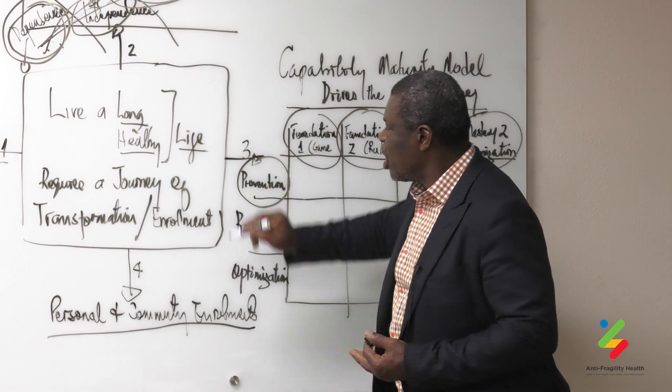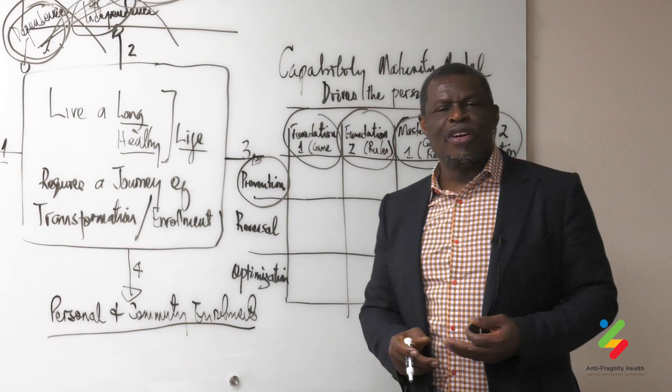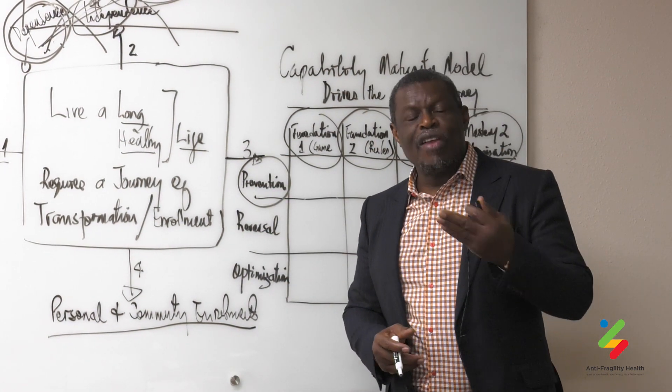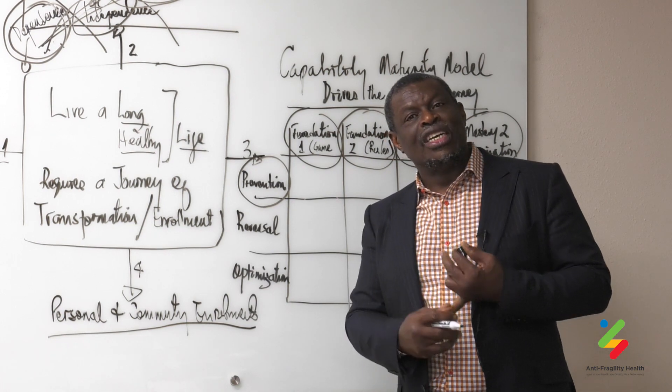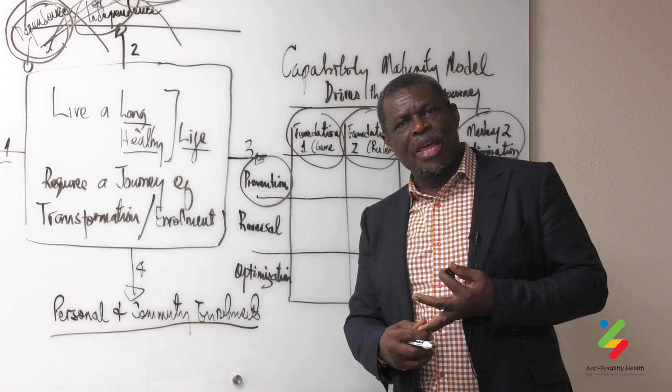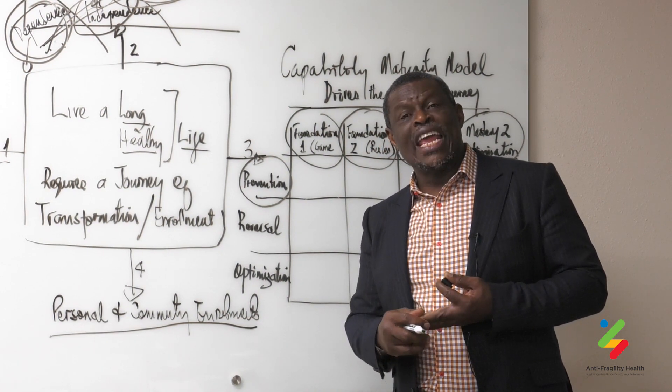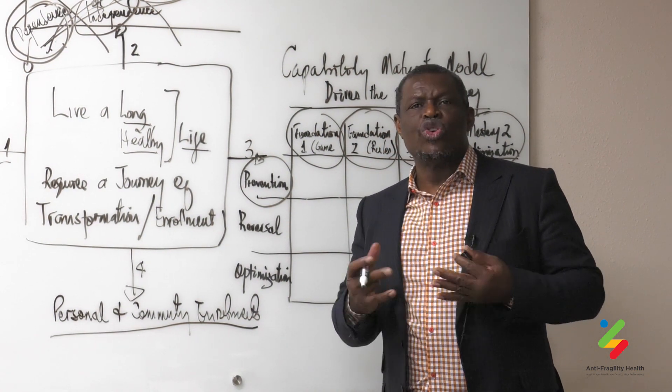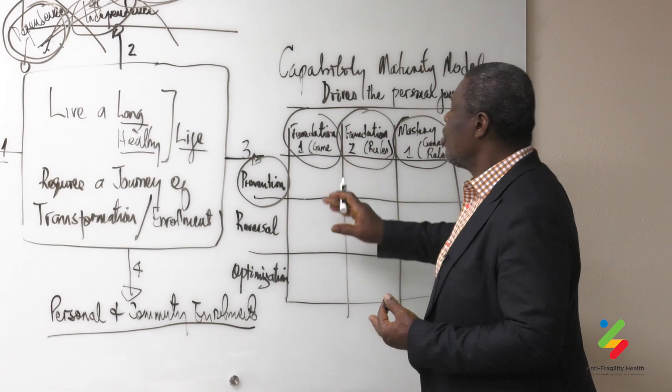What is the game and the rules? One is the game of prevention. What is the game of prevention? It is around the four things that we teach: physical well-being, nutritional well-being, emotional well-being, and environmental well-being. So you need to understand the game and the rules.